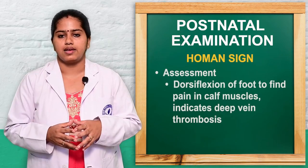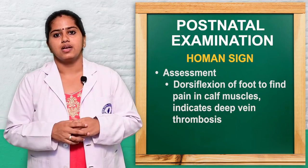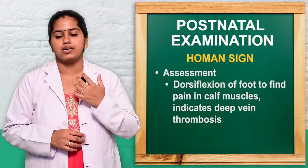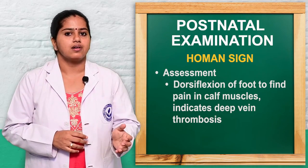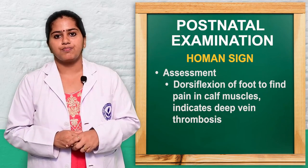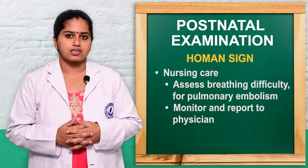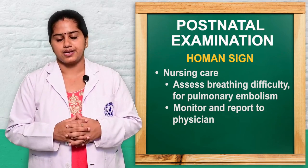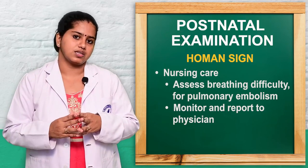The next H is for Homans' sign, used to identify thromboembolism, which is a risk particularly in caesarean delivery. We perform dorsiflexion of the foot and ask if there is pain in the calf muscles — pain indicates deep vein thrombosis. There is also a risk of pulmonary embolism, so any shortness of breath is assessed. If risk is identified, we intimate the obstetrician or physician.